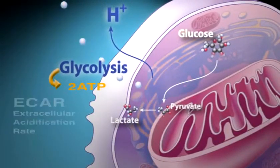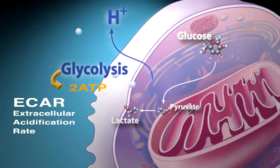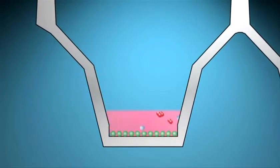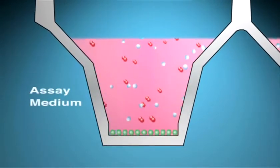To measure cell glycolysis using ECAR, the XF analyzer requires low buffered medium, typically necessitating a change from cell growth medium to assay medium.